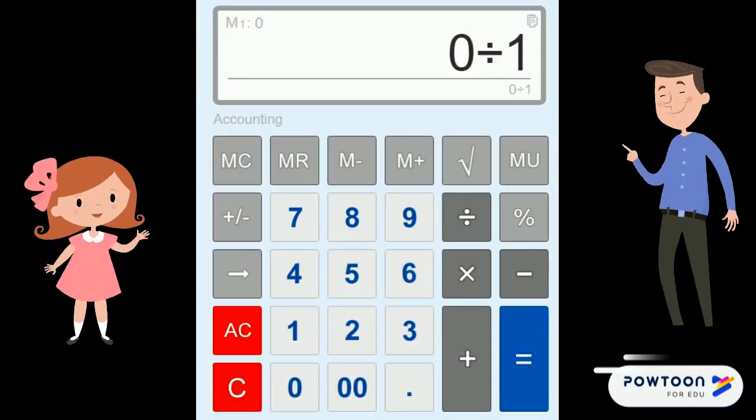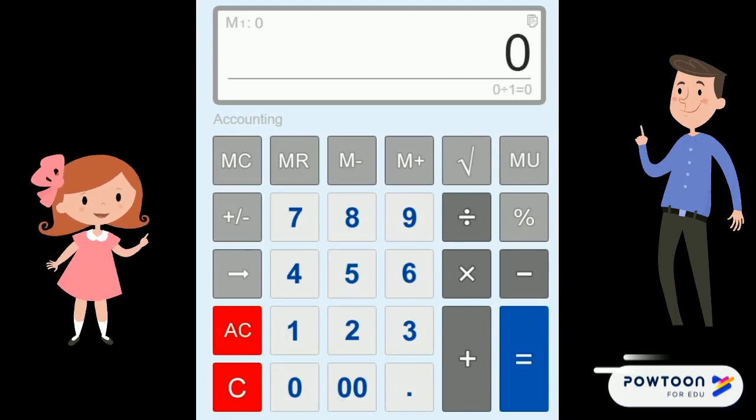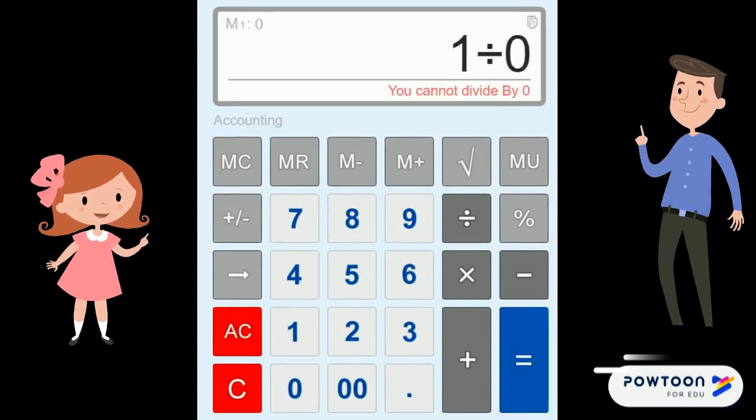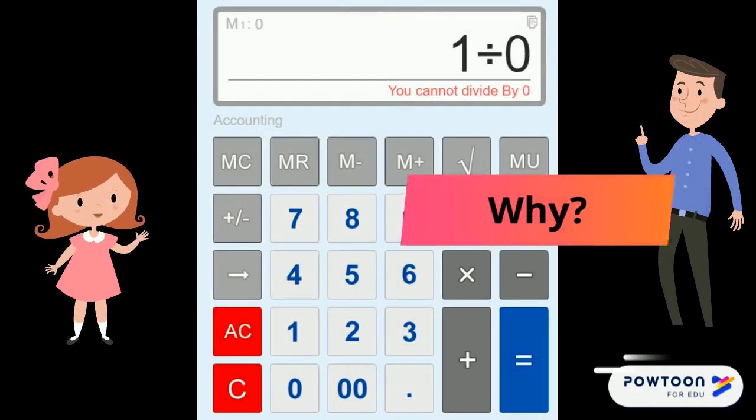Zero divided by one is zero. But one divided by zero - it shows you cannot divide by zero. Why?